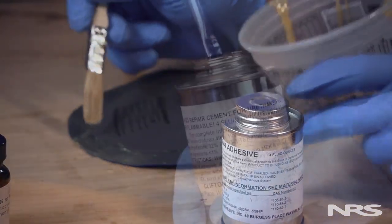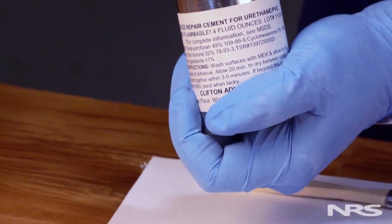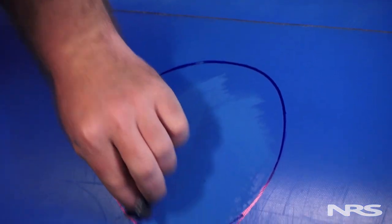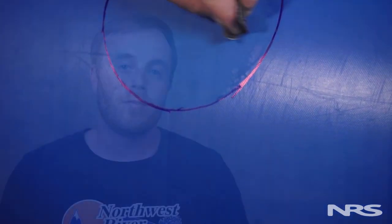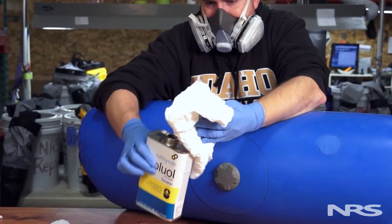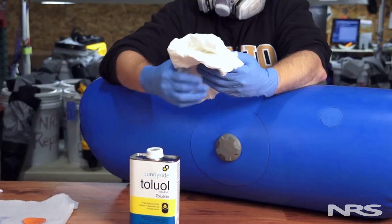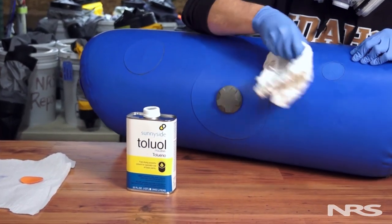If you're using Sta-Bond to glue Hypalon to any other material, mechanical prep will be the same - you'll still need to sand the surface. For chemical prep you can use the same chemicals that you used to clean the Hypalon as before: toluene, acetone, or alcohol are all acceptable. Cleaning the other material depends on what type of material you're using.